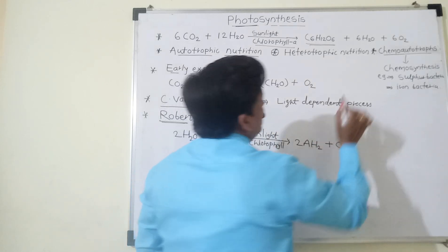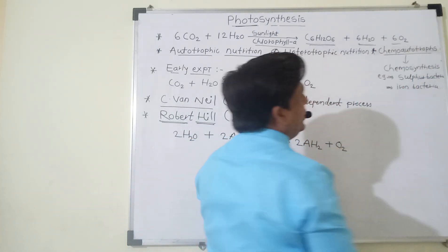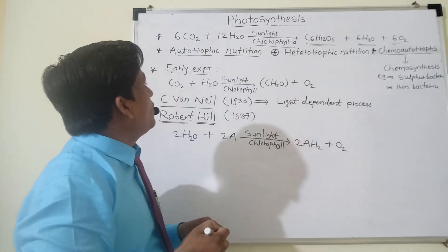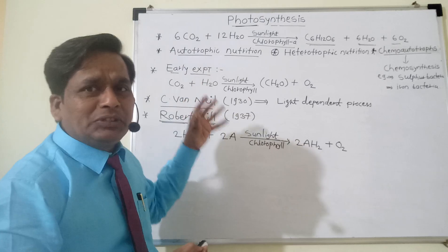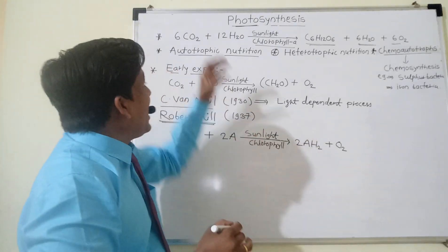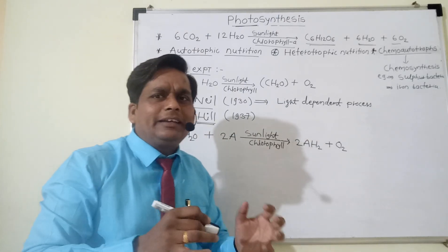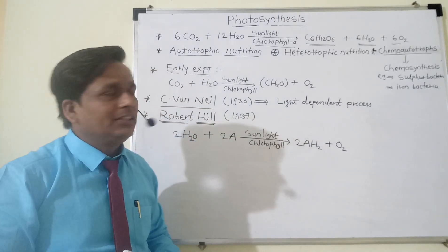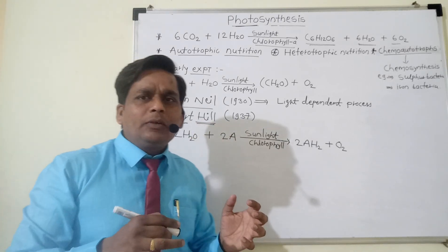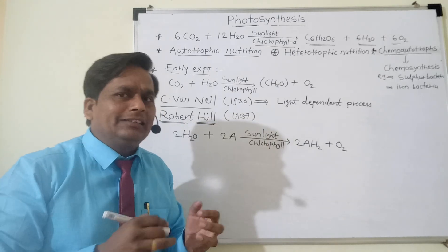The balanced equation involves 6CO2 + 6H2O producing C6H12O6 and 6O2. Oxygen is the byproduct of this process. However, the mechanism of photosynthesis is not as simple as the equation — it is a very complicated mechanism that we can study in detail through cyclic and non-cyclic photophosphorylation.